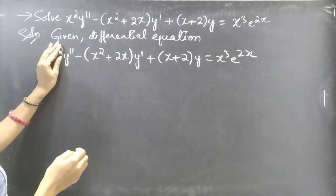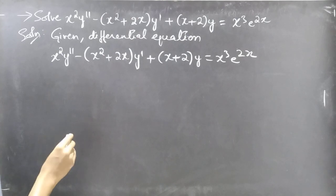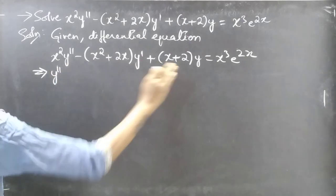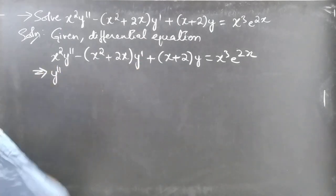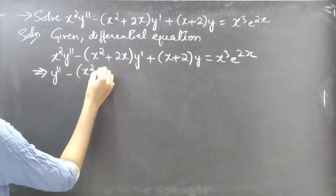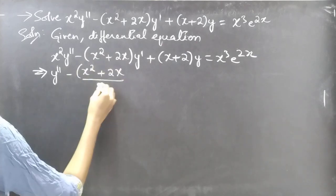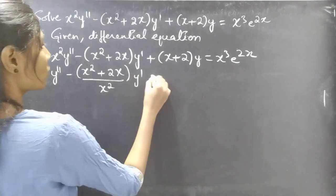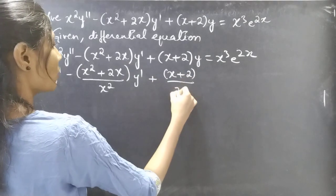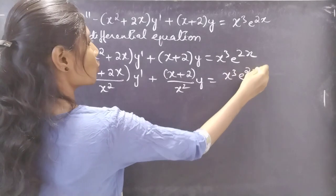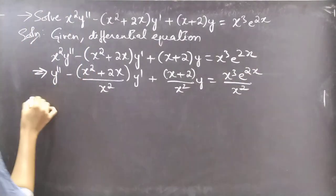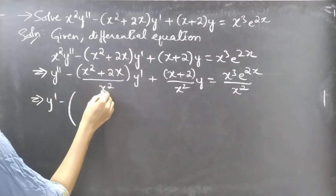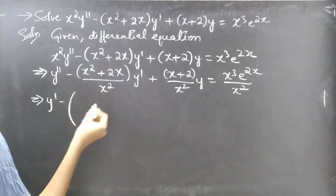Solution. We are given a differential equation with variable coefficients of order 2. Now let's make the coefficient of y double dash unity by writing the given equation in standard form of the second order linear differential equation. We simply divide both sides of the equation by x squared. Then we get y double dash minus (x squared plus 2x) by x squared into y dash plus (x plus 2) by x squared into y equal to x cube e power 2x by x squared.